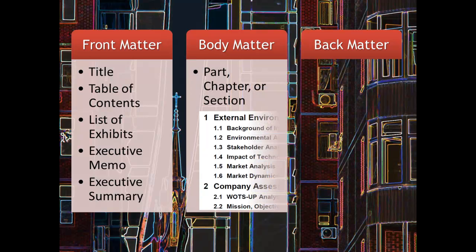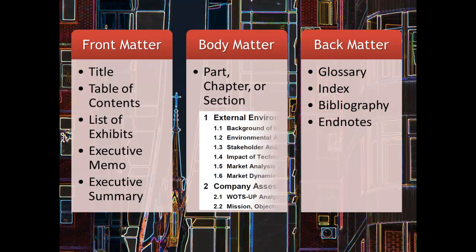The body matter is the actual report — it's the meat and potatoes. It's broken up into chapters, parts, or sections, and then each subheading goes into detail about each part. The back matter includes elements like the glossary and the endnotes. The order of these items can vary based on your document's requirements, so always refer to whatever company, class, or other style guide you're using.